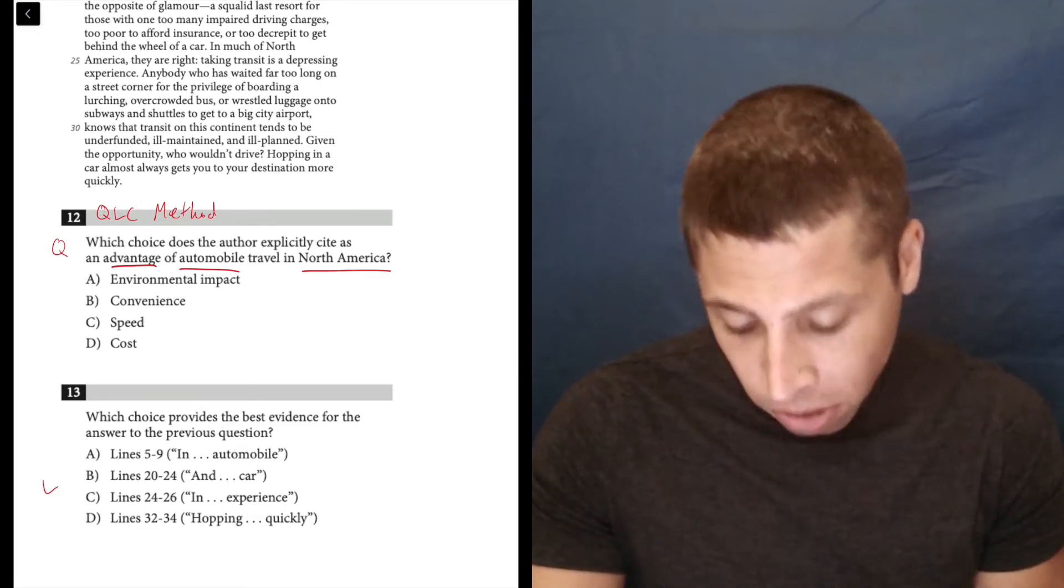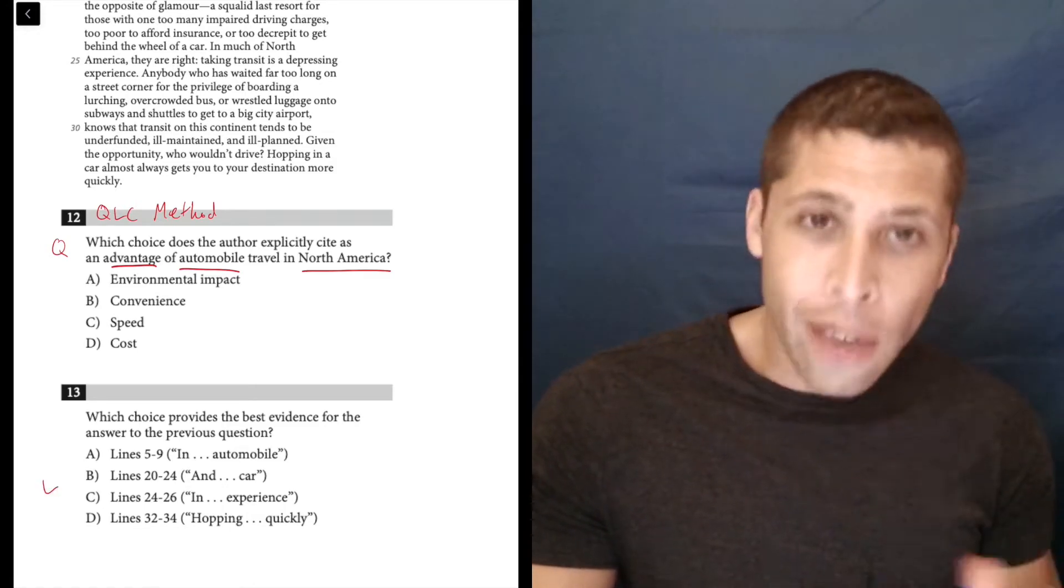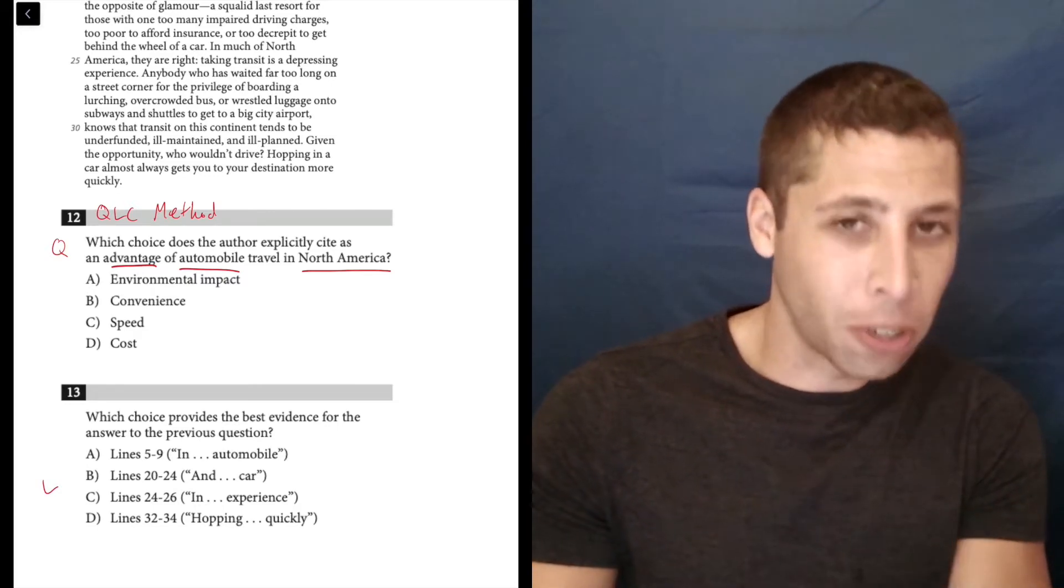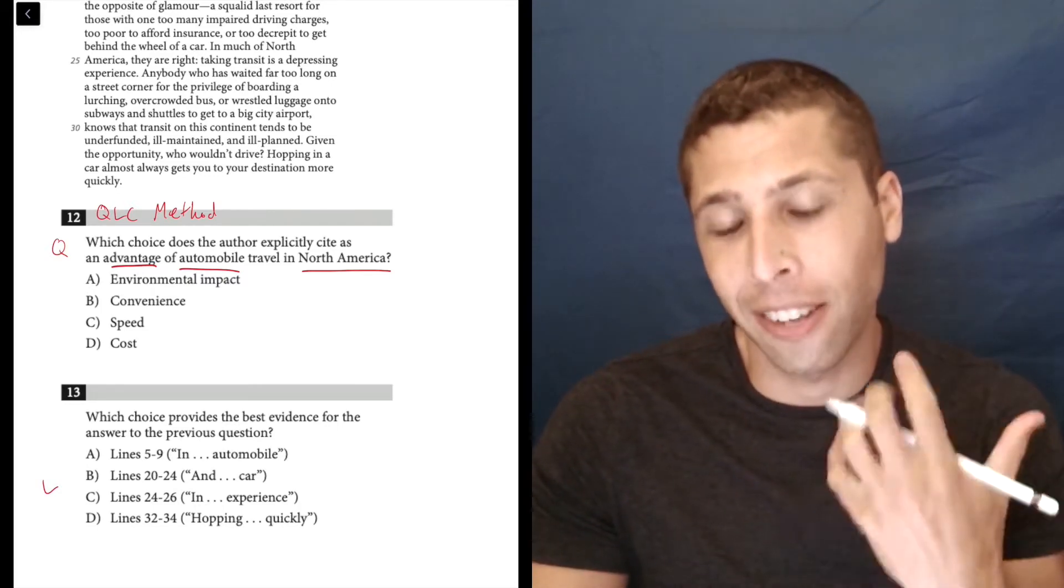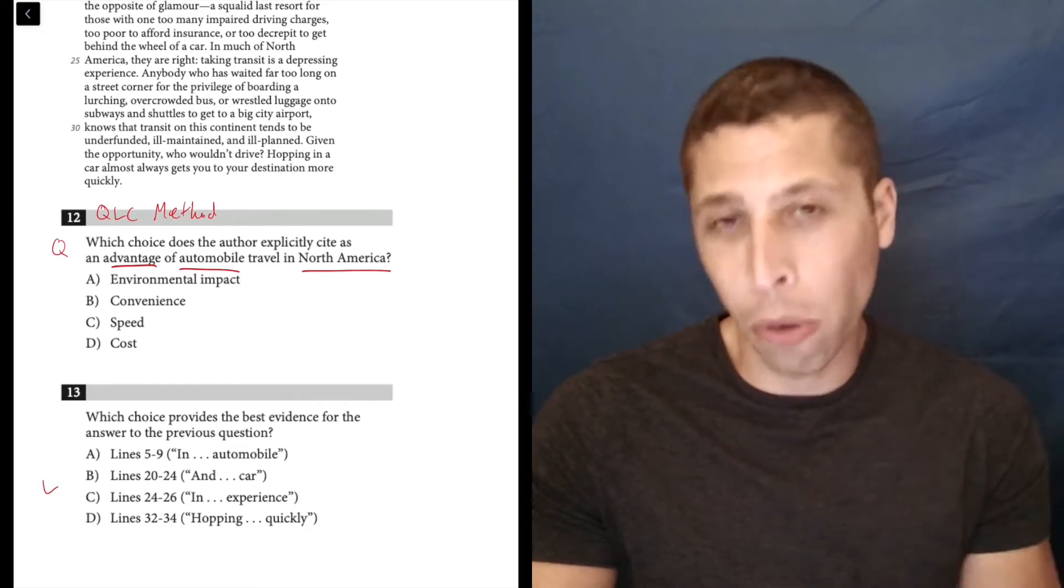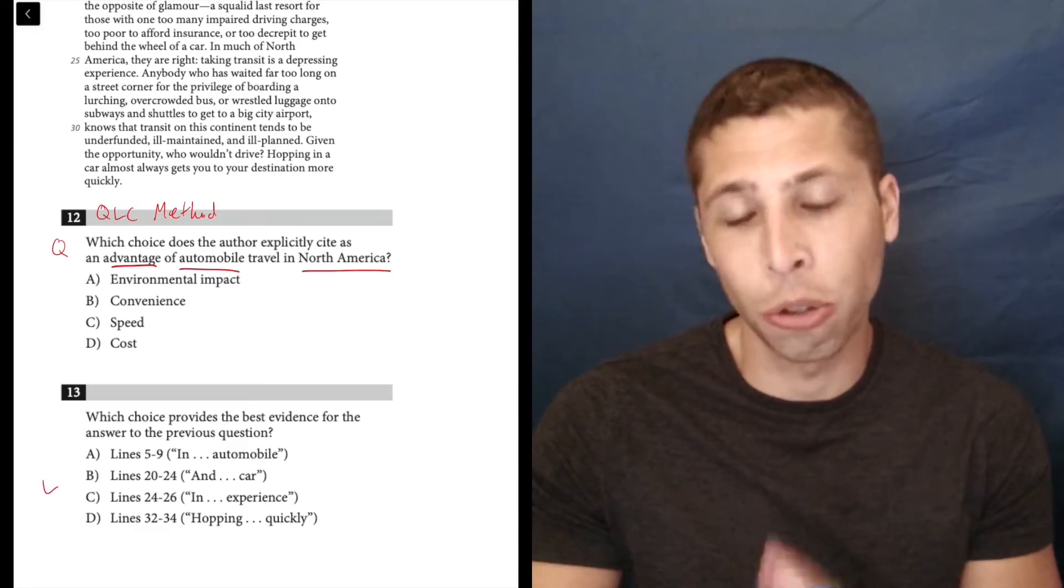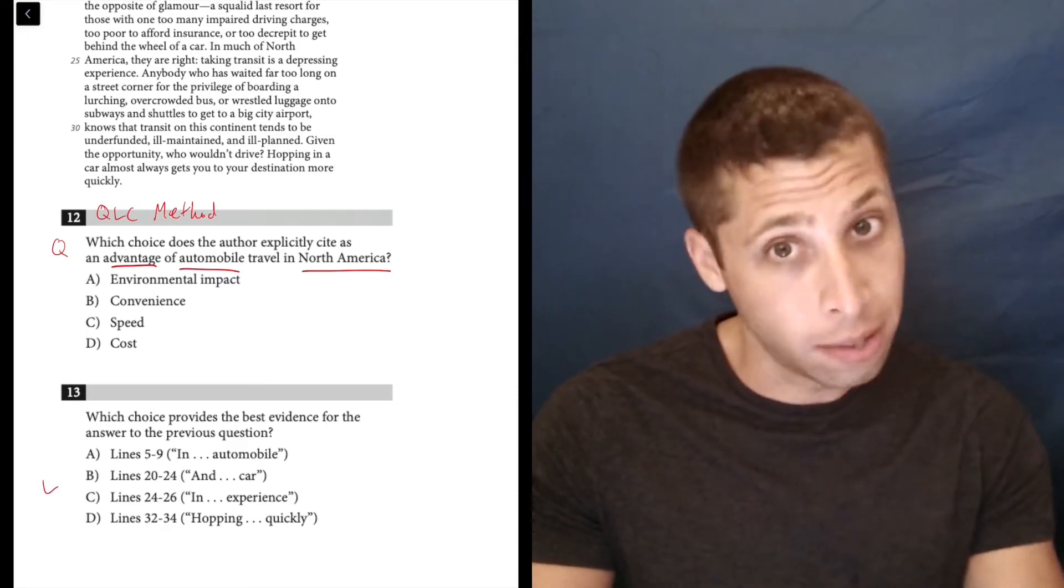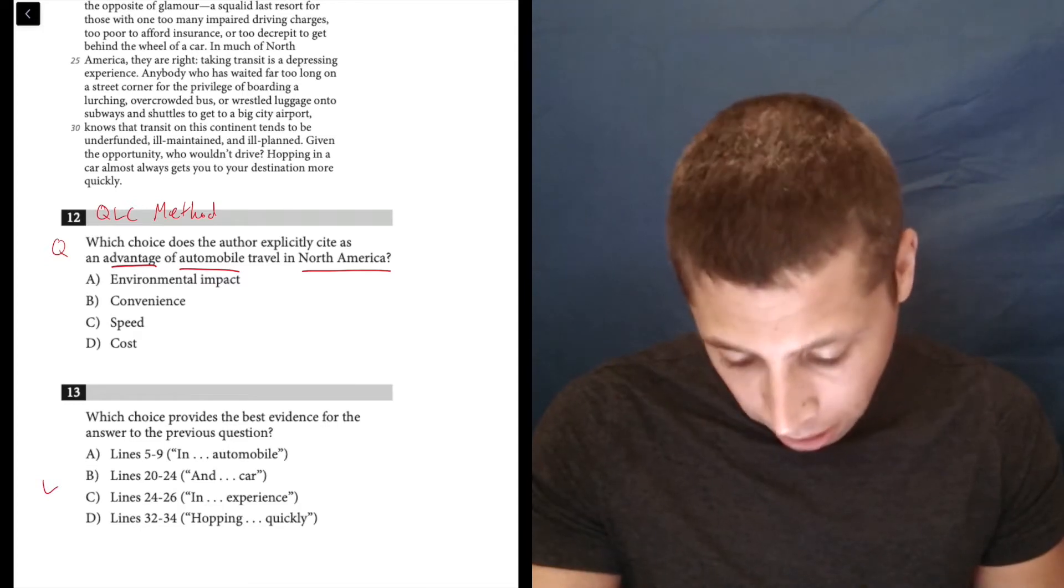Now I go to the line references though, and if you wanted to, you might be able to look at those answer choices first in this case and get a sense of what you're looking for. That kind of breaks the normal order of things, but because the choices are so short, I get why that might be doable here. But let's just go to the lines, okay? Let's do that the normal way here, five to nine.